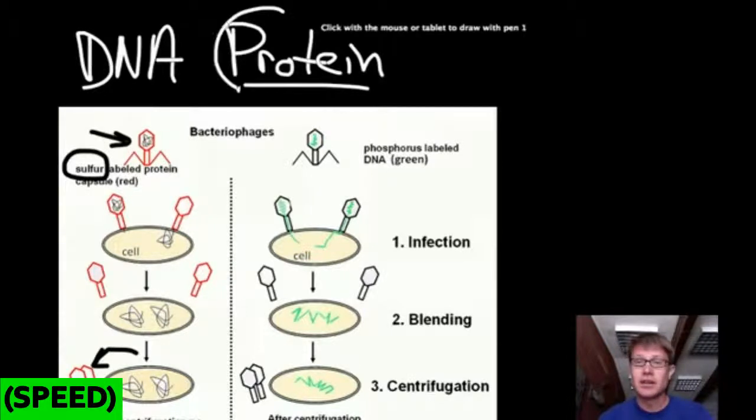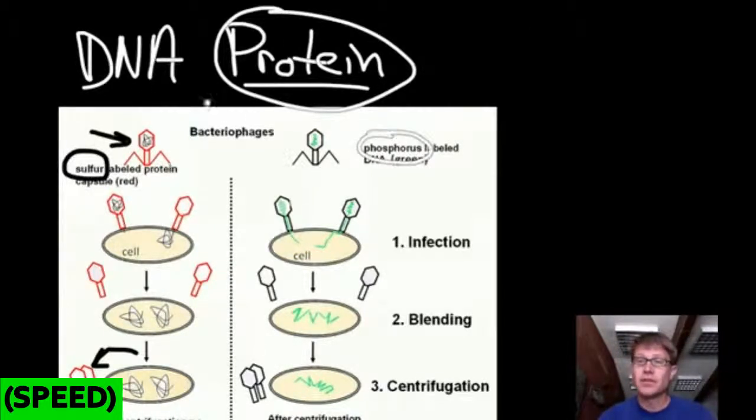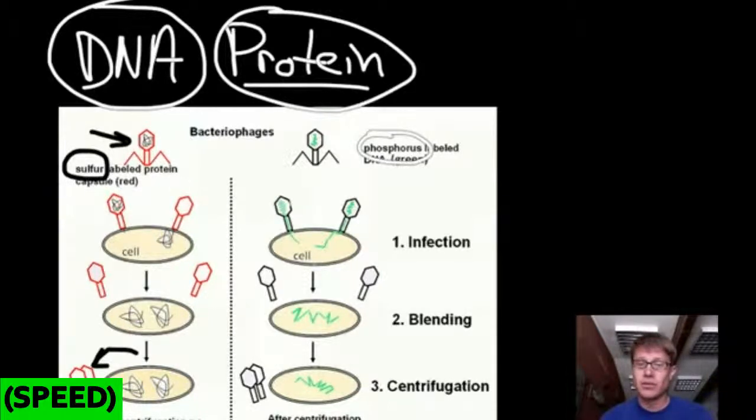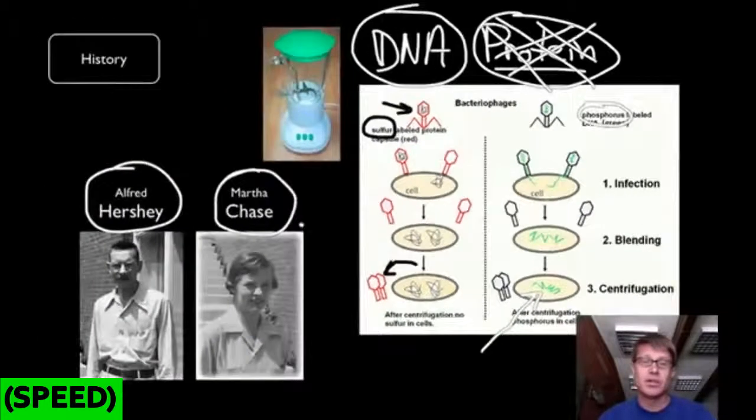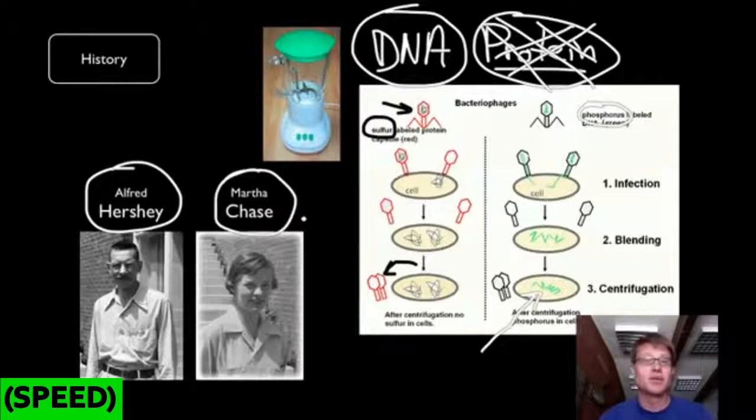They then used a different dye to dye phosphorus. Phosphorus is found in DNA, but it's not found in proteins. And so what they were able to show is that the only one that was doing the transforming was this green dye. That means that it was the phosphorus, and that means that it wasn't proteins that were transferring the information, that it was DNA. And so the Hershey Chase experiment was definitive proof that DNA was the hereditary material.